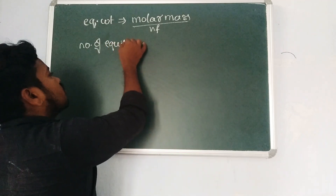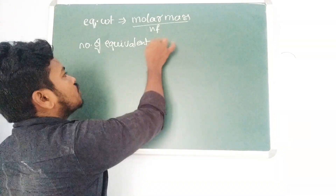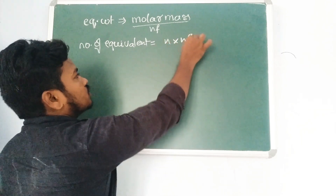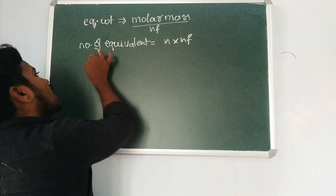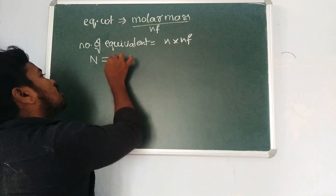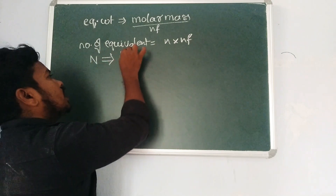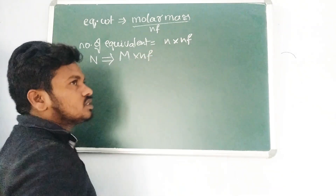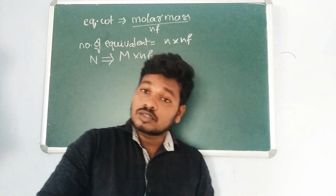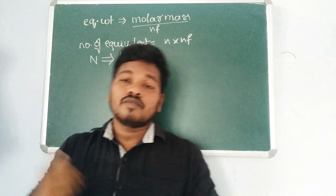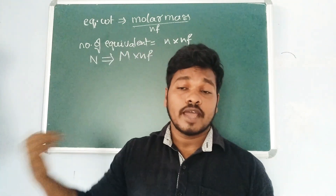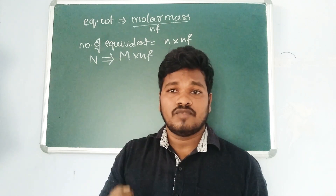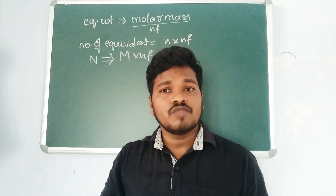The n-factor is also used in calculating number of equivalents — number of equivalents equals number of moles multiplied by n-factor. It is also used in normality calculations: normality equals molarity multiplied by n-factor. In addition, it is used in titrations, redox reactions, and many other chemical reaction calculations.